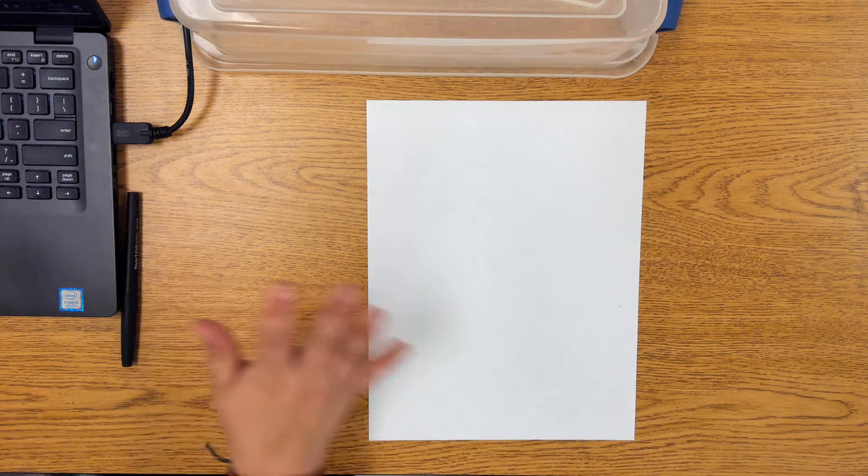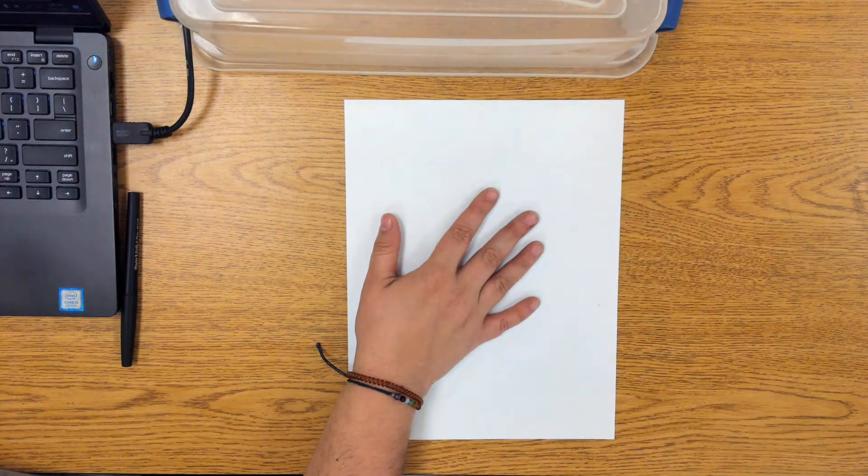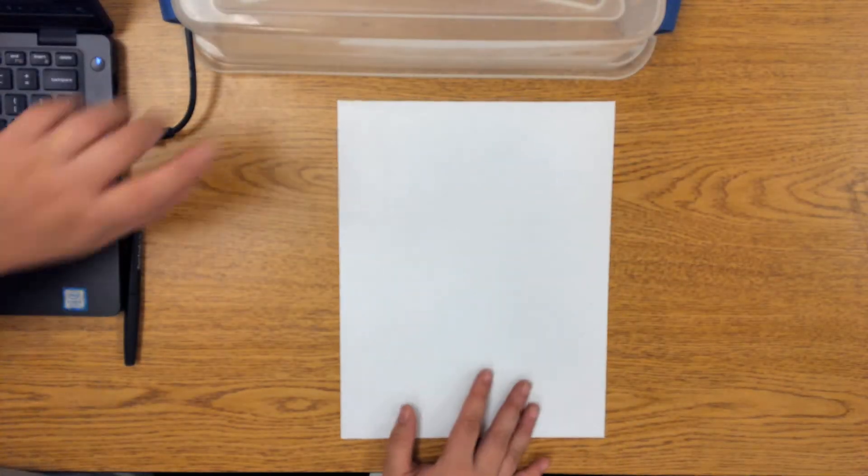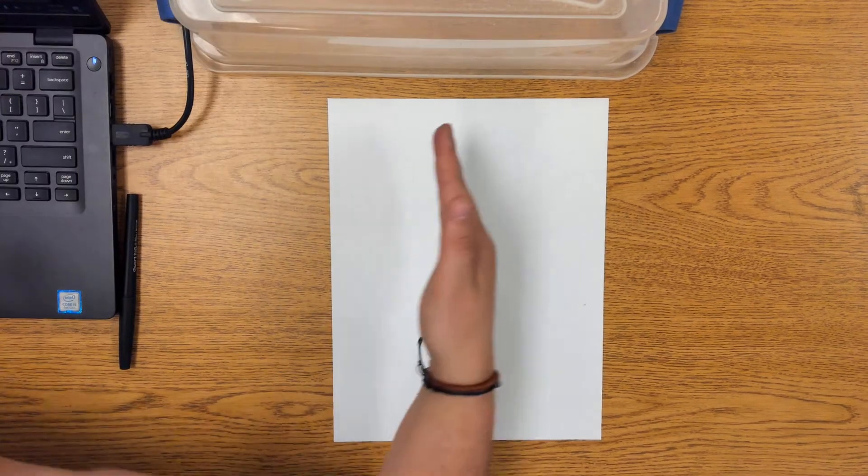Alright guys, so first step today with your paper, you're going to grab your paper and make sure it's going vertical, up and down. We are going to fold our paper and we need it to go right in half.